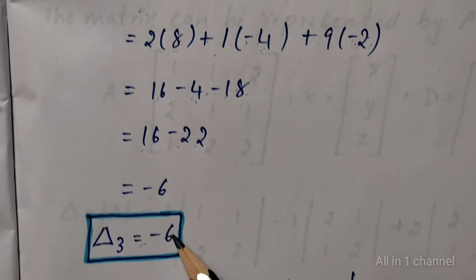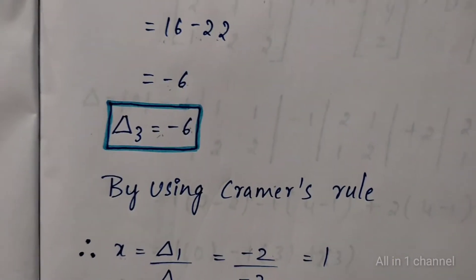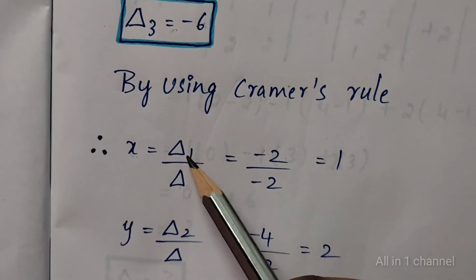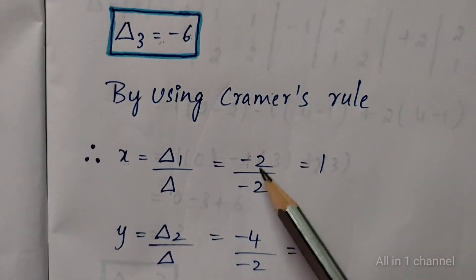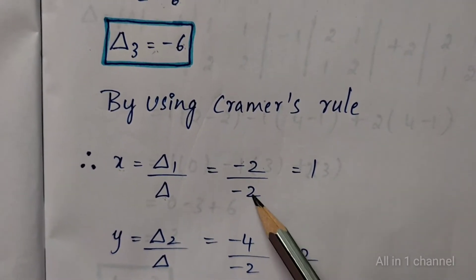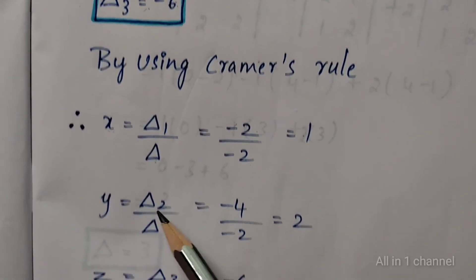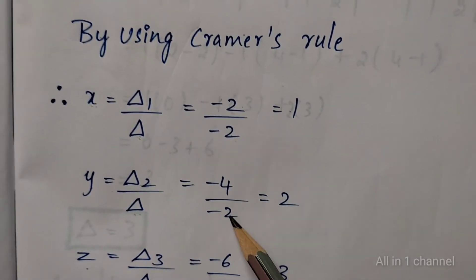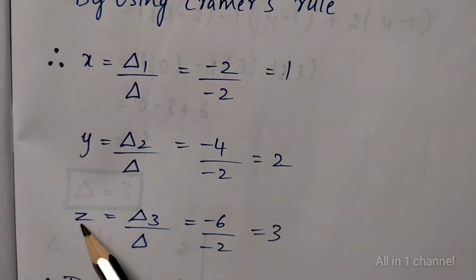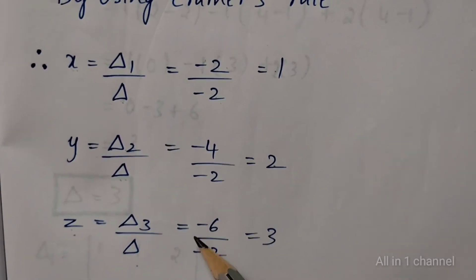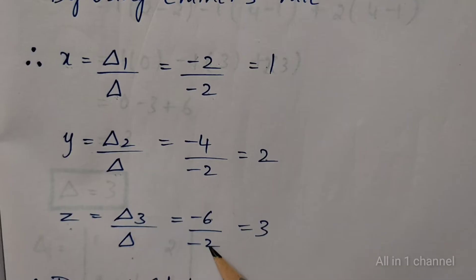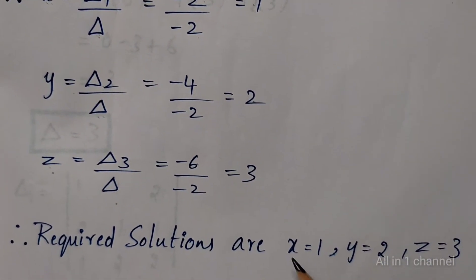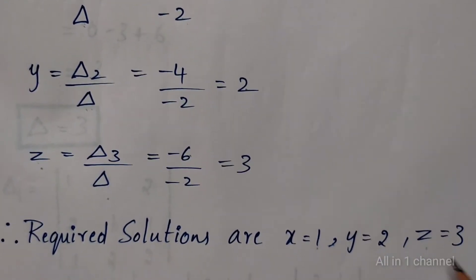So delta 3 equal to minus 6. By using Cramer's Rule, we have to find x, y, z values. x equal to delta 1 by delta: delta 1 value minus 2, delta value minus 2, so x equals 1. y equal to delta 2 by delta: delta 2 value minus 4, delta value minus 2, so y equals 2. z equal to delta 3 by delta: delta 3 value minus 6, delta value minus 2, so z equals 3. Therefore, required solutions are x equal to 1, y equal to 2, z equal to 3.